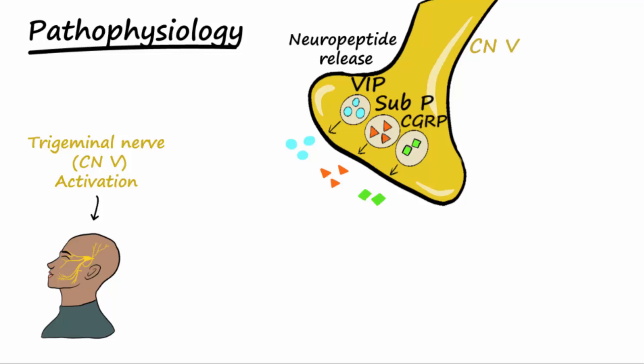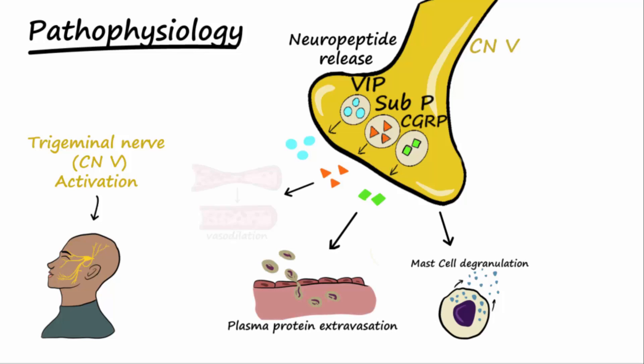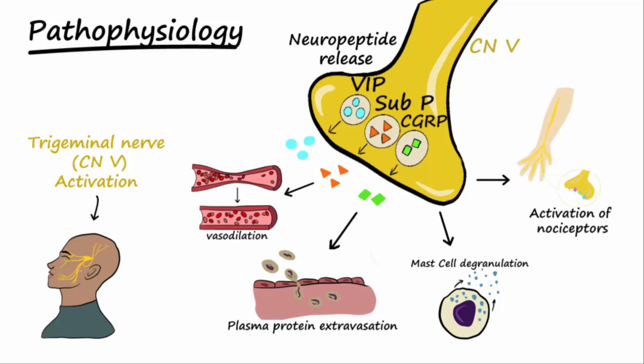These neuropeptides cause painful neurogenic inflammation in the meningeal vasculature, causing mast cell degranulation, plasma protein extravasation, vasodilation, and activation of nociceptors — all of which contribute to the migraine headache. These neuropeptides play an important role in trigeminal vascular pain transmission in migraines.